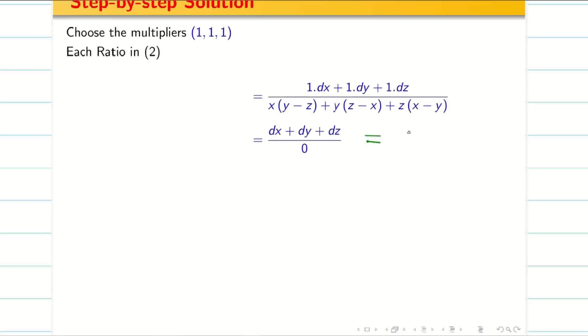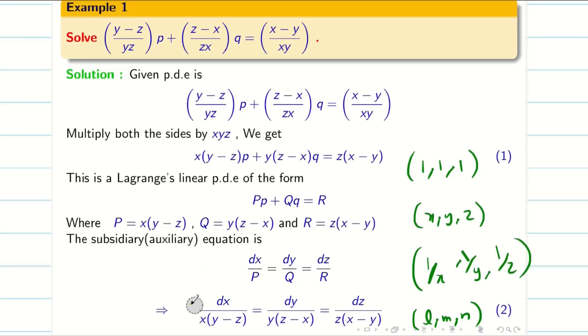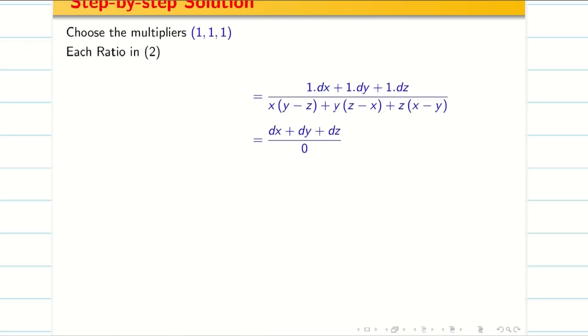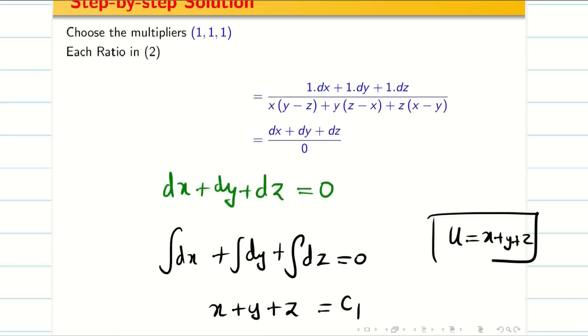If my denominator is zero, obviously my numerator is also zero. Therefore I conclude dx + dy + dz = 0. Integrating this: ∫dx + ∫dy + ∫dz = 0. Therefore x + y + z = c₁. Immediately I write this as my solution 1, that is u.